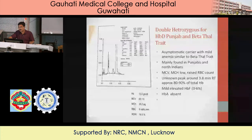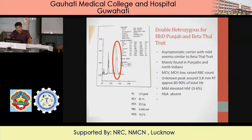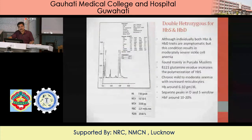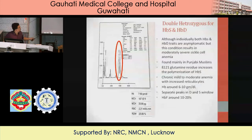Double heterozygous for HbD and beta-thal trait: you will find an unknown peak in the HbD Punjab window as well as slightly raised A2. The unknown peak may constitute about 80–90% of total hemoglobin with mild elevated HbF also noted. For double heterozygous HbS and HbD: you get one unknown peak for HbD and another peak in the S window for HbS. If you find these two together, it is a double heterozygous for both HbS and HbD.